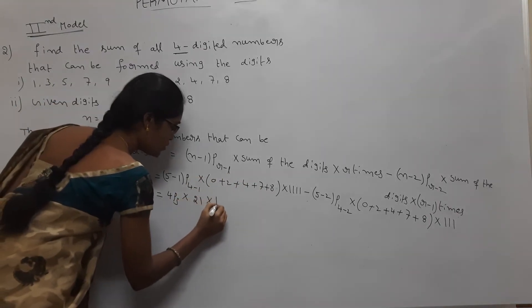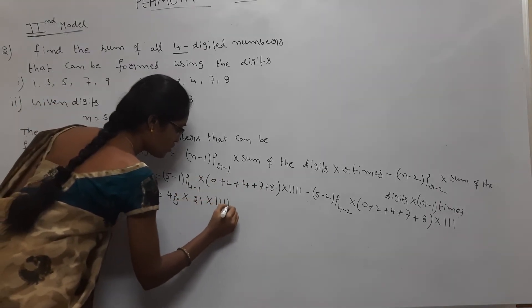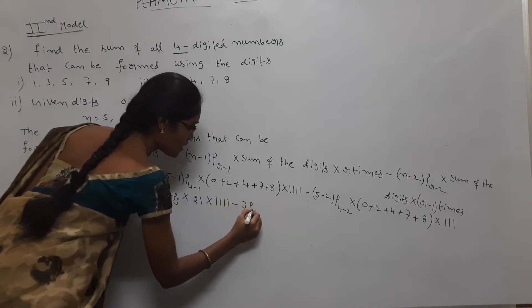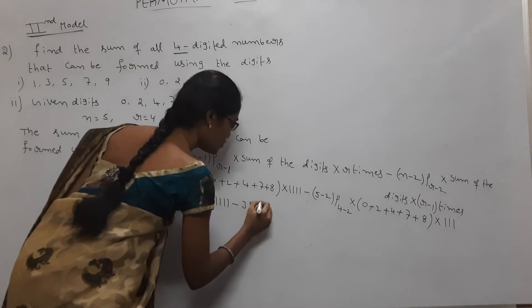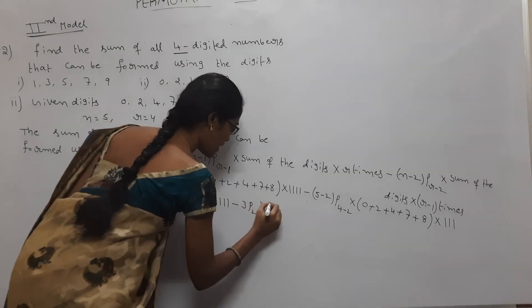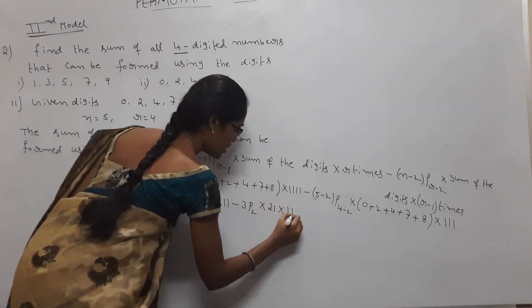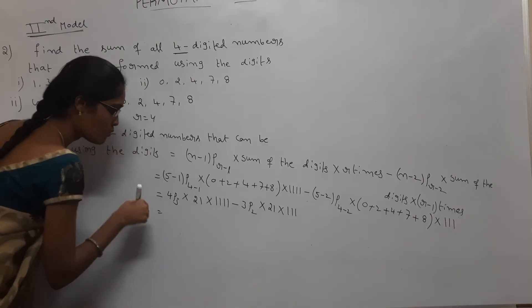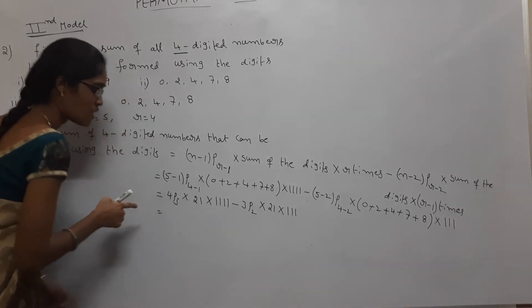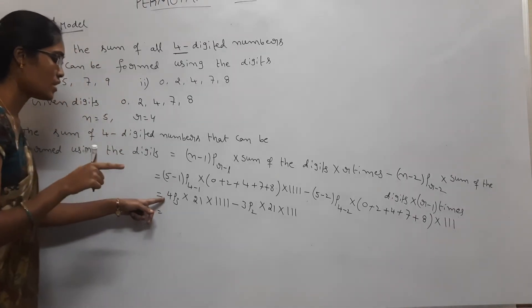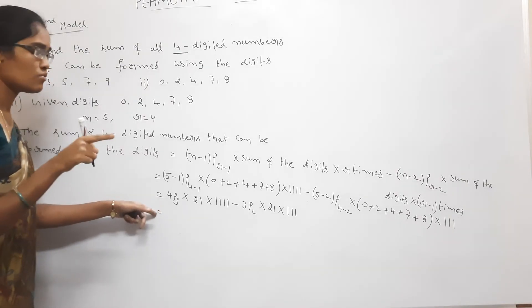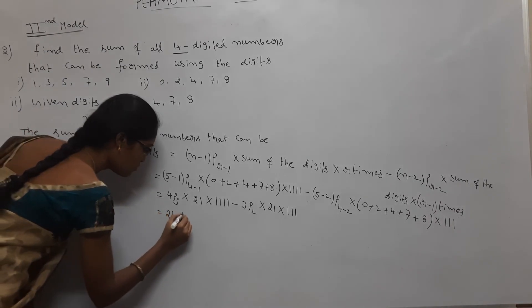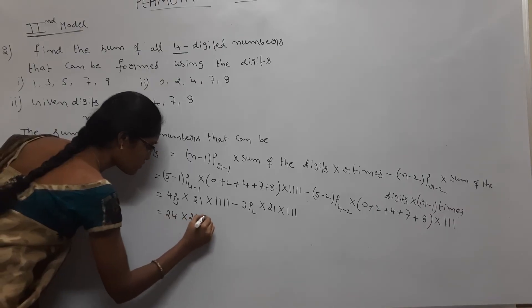Substituting: (5−1)P(4−1) is 4P3; sum of digits 0+2+4+7+8 = 21; r times is 1111. Minus: (5−2)P(4−2) is 3P2; sum of digits is 21; (r−1) times is 111. 4P3 = 4×3×2 = 24. So 24 into 21 = 504.